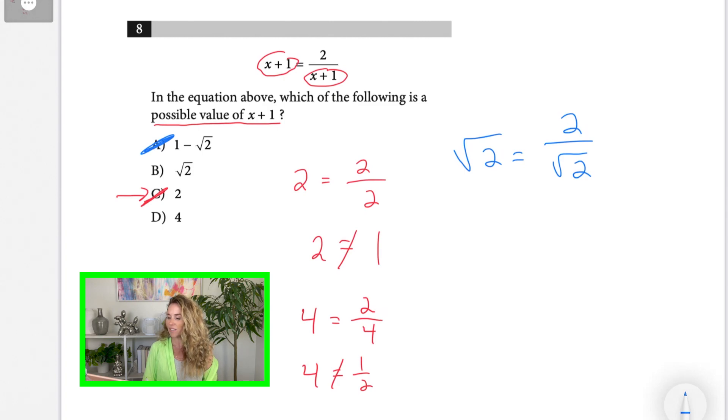Well, I can't simplify 2 over radical 2 easily if I'm on a no-calculator question. But what I could do is force a fraction on the other side and cross-multiply. Radical 2 times radical 2 is radical 4. 2 times 1 is 2. Does radical 4 equal 2? It sure does. So there you go. B works.